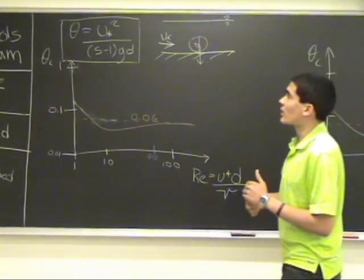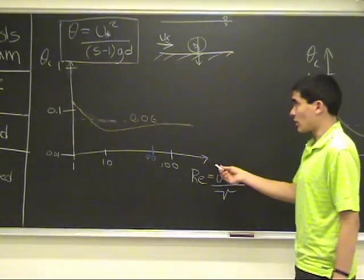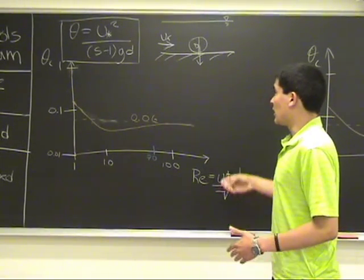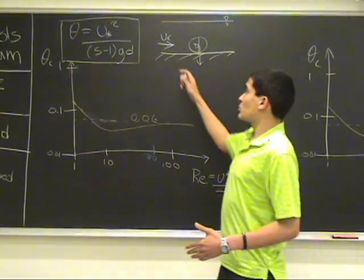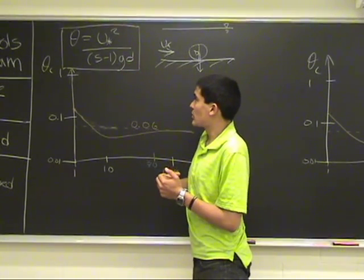So first of all the shields diagram here is where it all starts. This is the diagram that was drawn by Mr. Shields in 1936 and he made a lot of experiments and came up with this dimensionless coefficient called the shields parameter.